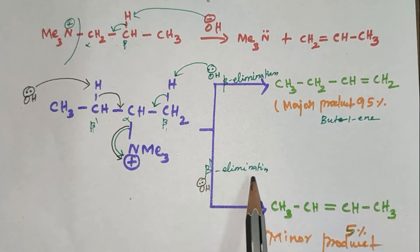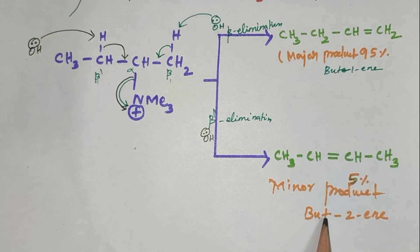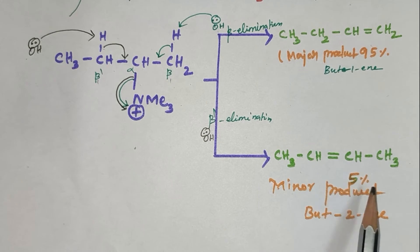The other beta dash elimination: OH- ion abstracts a proton from the beta dash carbon. We get the product but-2-ene. It is a minor product. 5% of yield is obtained.